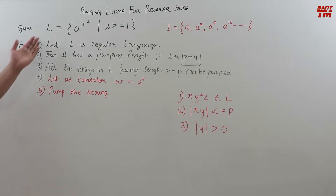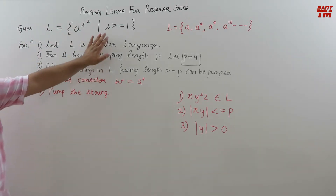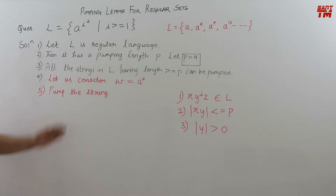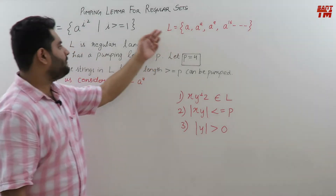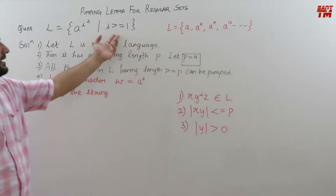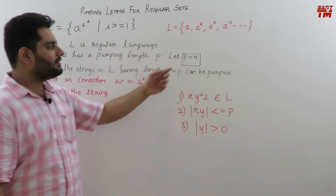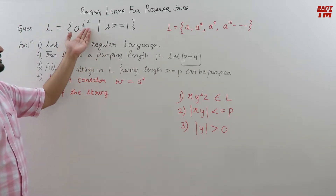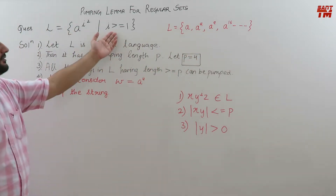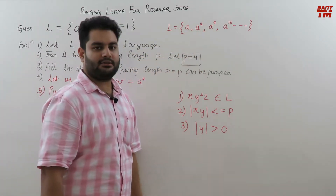Consider this example. In this language is given to us as a raised to the power i square, such that i should be greater than or equal to 1. If you analyze this language, you will see that it will contain strings like these: if i equals 1, it will be a raised to the power 1 square, that is a only; if i equals 2, it will be a raised to the power 4; if i equals 3, a raised to the power 9; if i equals 4, a raised to the power 16, and so on.